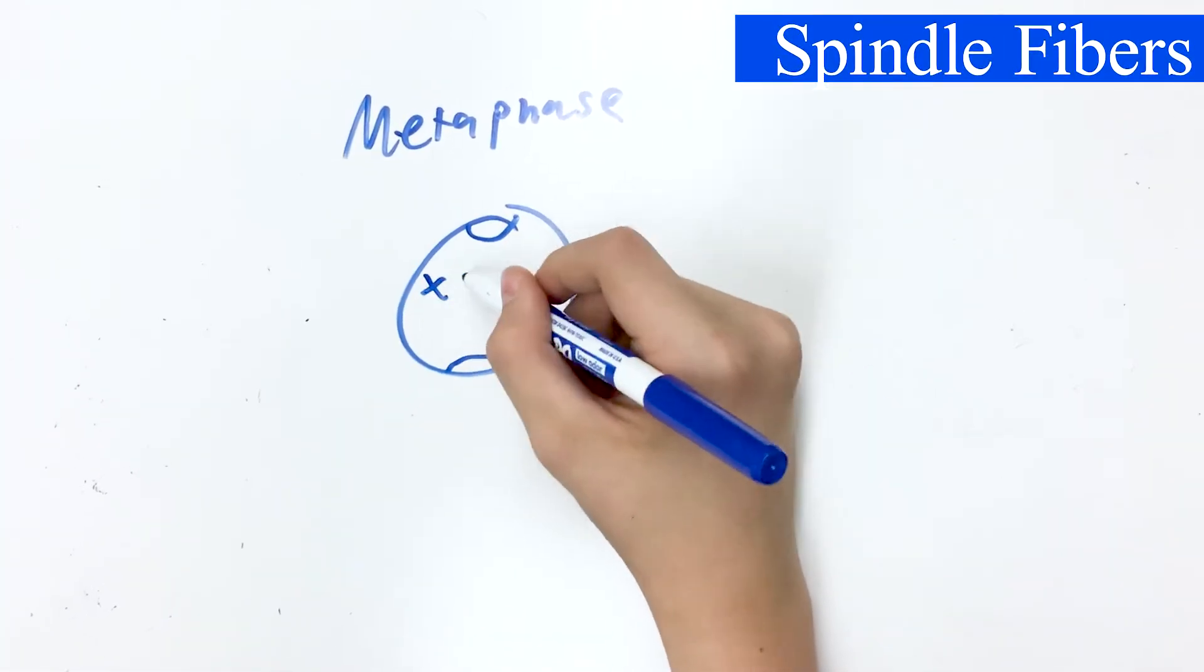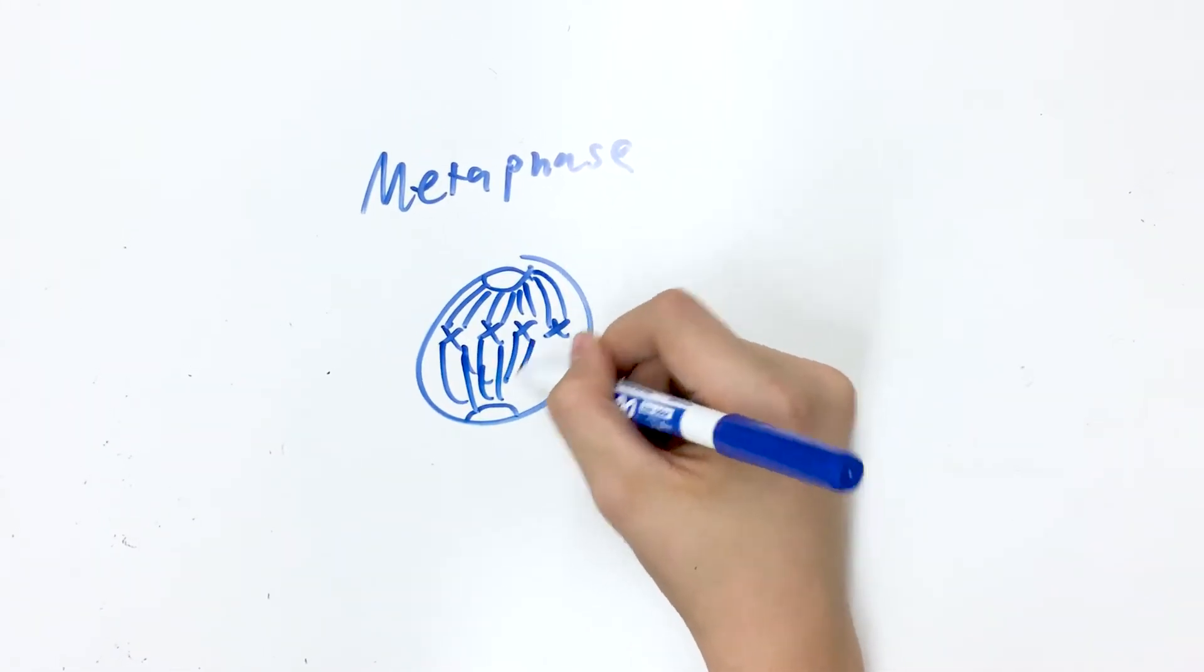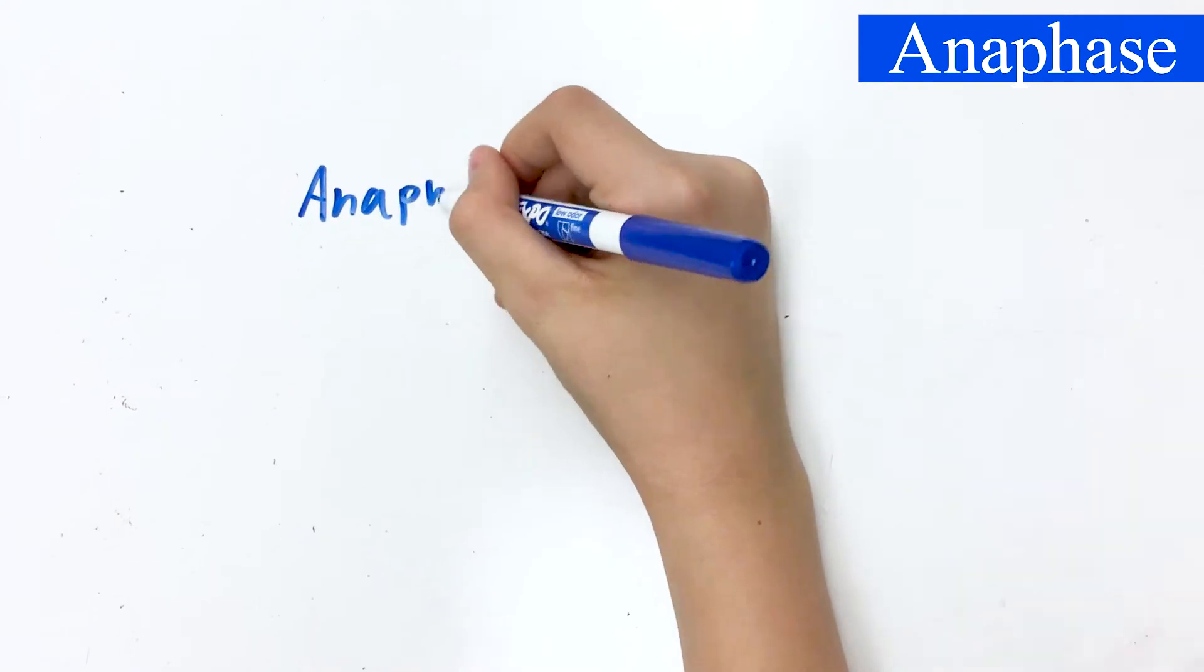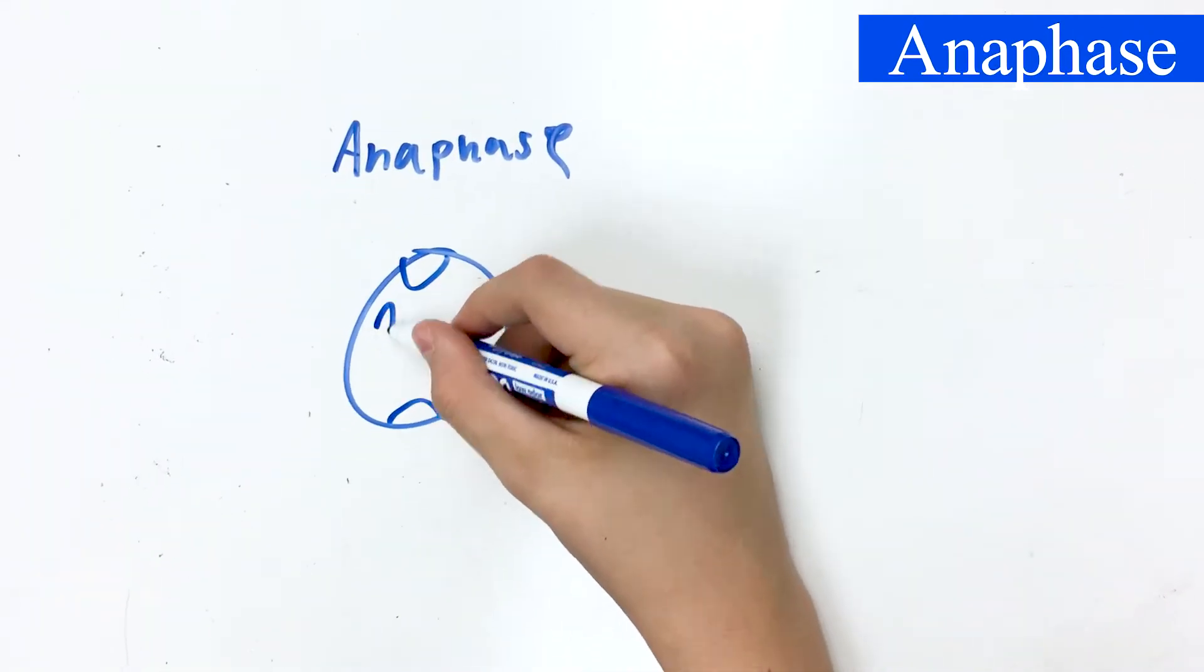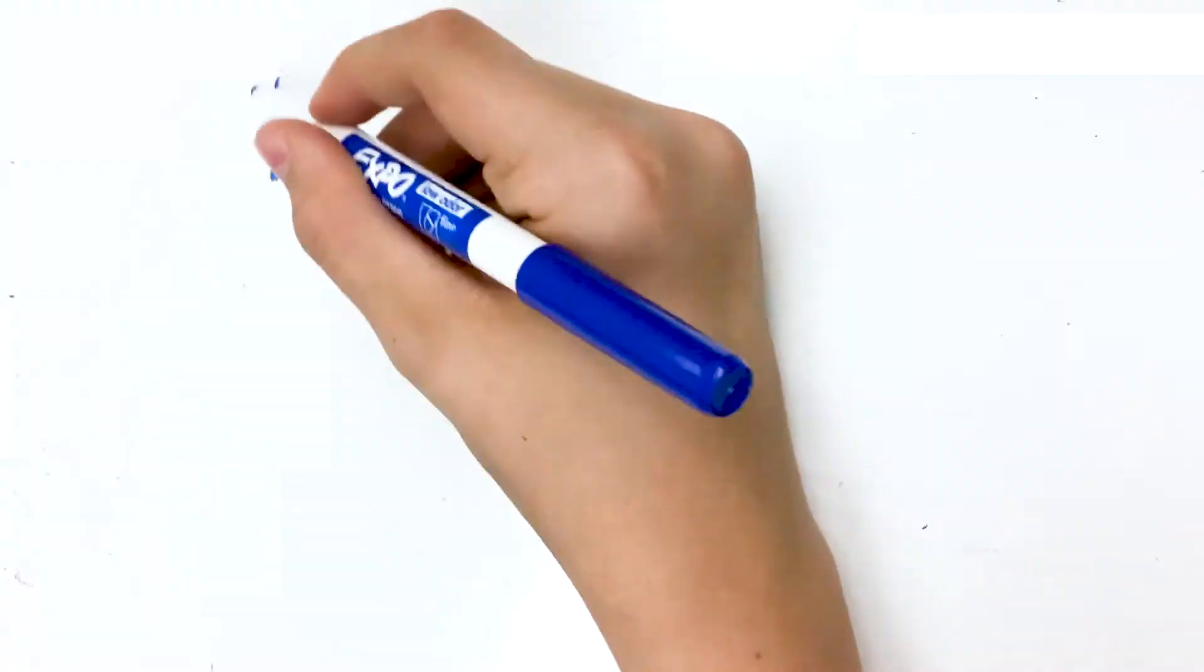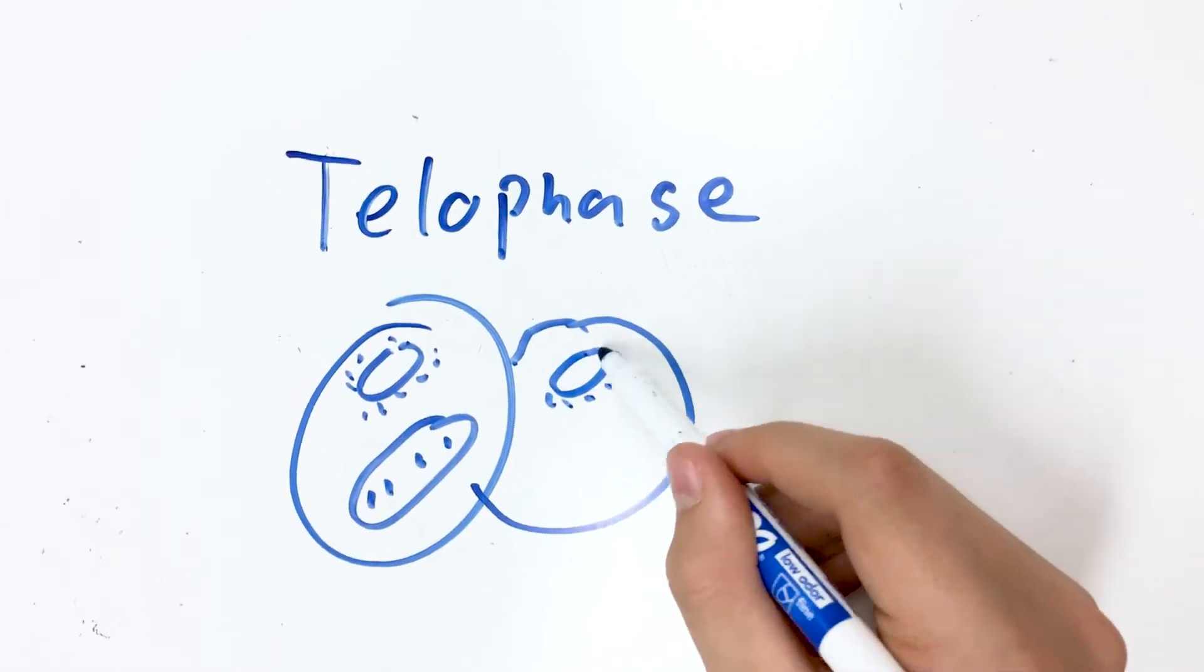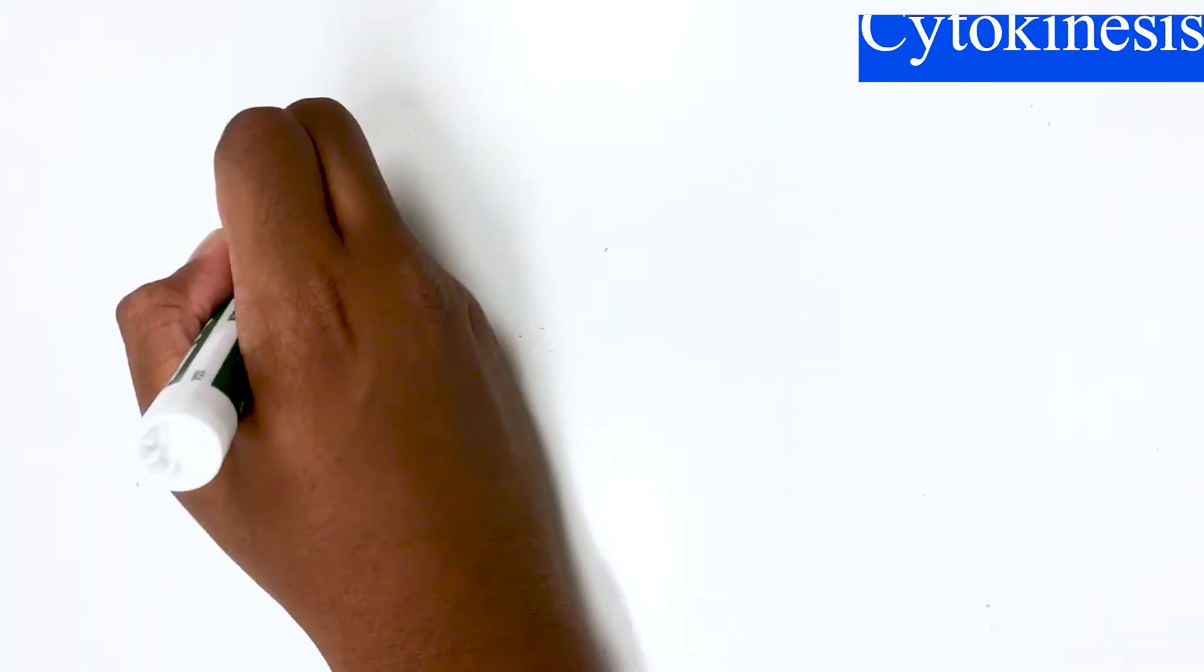In metaphase, the centrioles move to the opposite poles of the cell and chromosomes line up in the middle of the cell. During anaphase, the sister chromatids or chromosomes are pulled apart by the spindle fibers. Telophase is the final stage of mitosis. The nuclear envelope begins to reform as the cell is ready to separate.